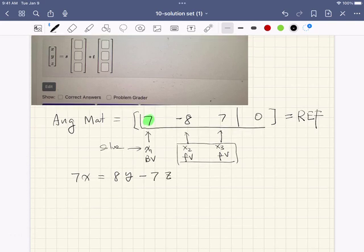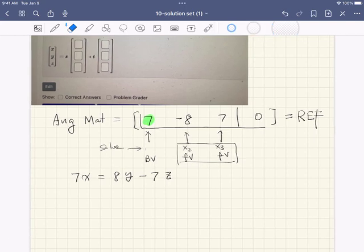I'm sorry, they use X, Y, Z instead of X sub 1, sub 2, sub 3, so I'm going to change the variables here. So, this is X column, Y column, Z column.